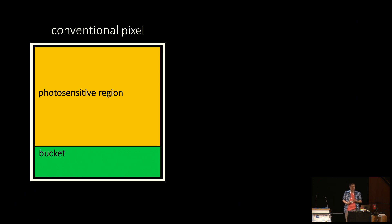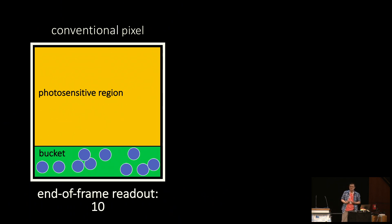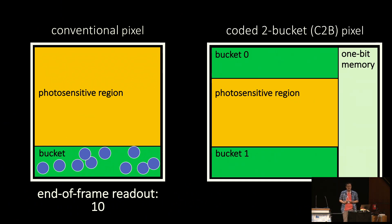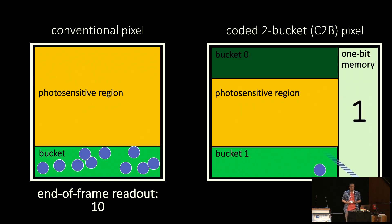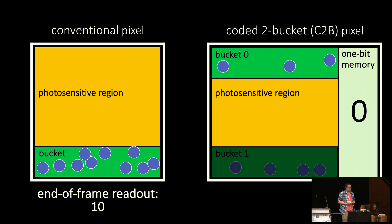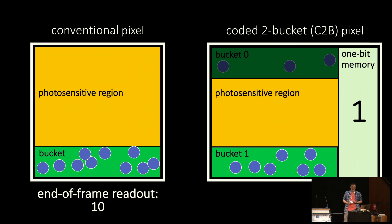A conventional pixel has two parts: a photosensitive region that generates electrical charges in response to light, and a bucket that accumulates them. This accumulation starts at the beginning of each frame, and the total accumulated value is read out at the end of the frame. Our pixel, on the other hand, has two buckets that can accumulate charges, as well as a one-bit memory that specifies which bucket should be actively accumulating charge at any given instance. This bit can be programmed to flip any number of times during a frame. So a pixel can begin a frame by sending charges to bucket one, then switch to bucket zero, and then switch back again. The charges are read out only at the end of the frame, but our pixel outputs two values instead of just one.